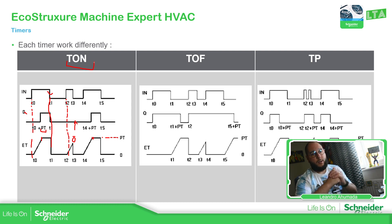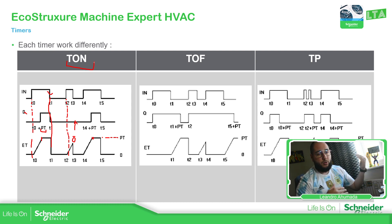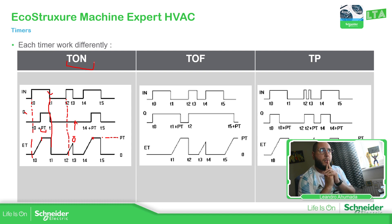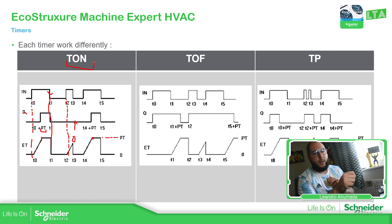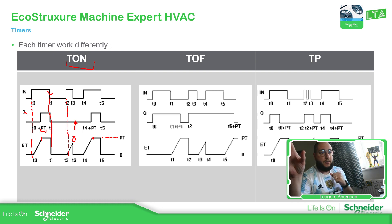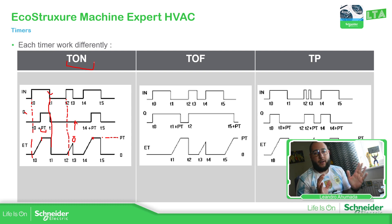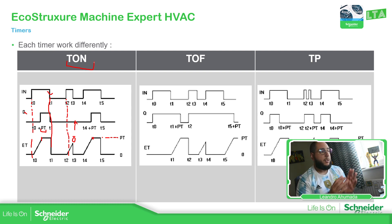So if you want to turn on, for example, a fan — imagine you have a switch and you activate it. You want the lights or pilot to come on immediately, but you need to wait, say, five seconds until the fan turns on. Then you can use the T-ON for that.